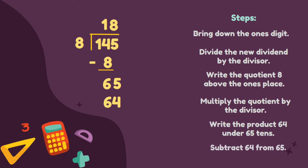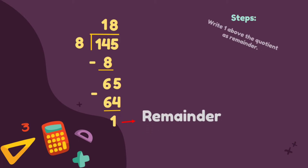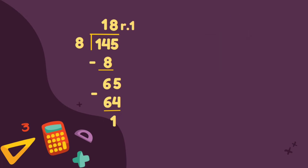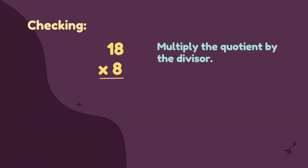Subtract 64 from 65: 65 minus 64 is equal to 1. This 1 is called remainder. Write 1 above the quotient as remainder. Our quotient is 18 remainder 1. Therefore, our final answer is: there is 1 extra bottle cup. To check if our answer is correct, we need to multiply the quotient by the divisor. We are going to multiply 18 by 8.